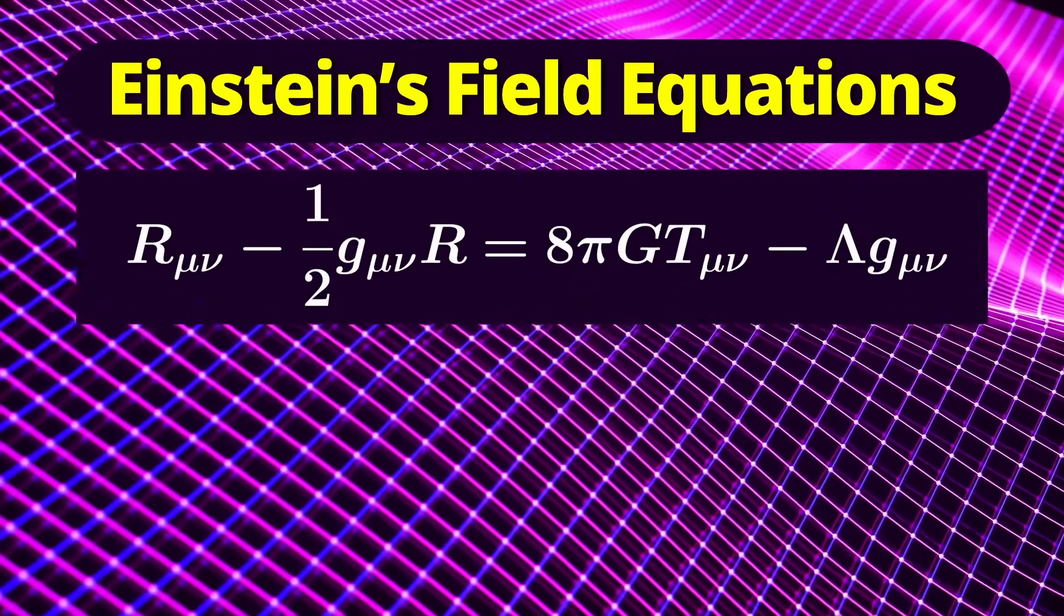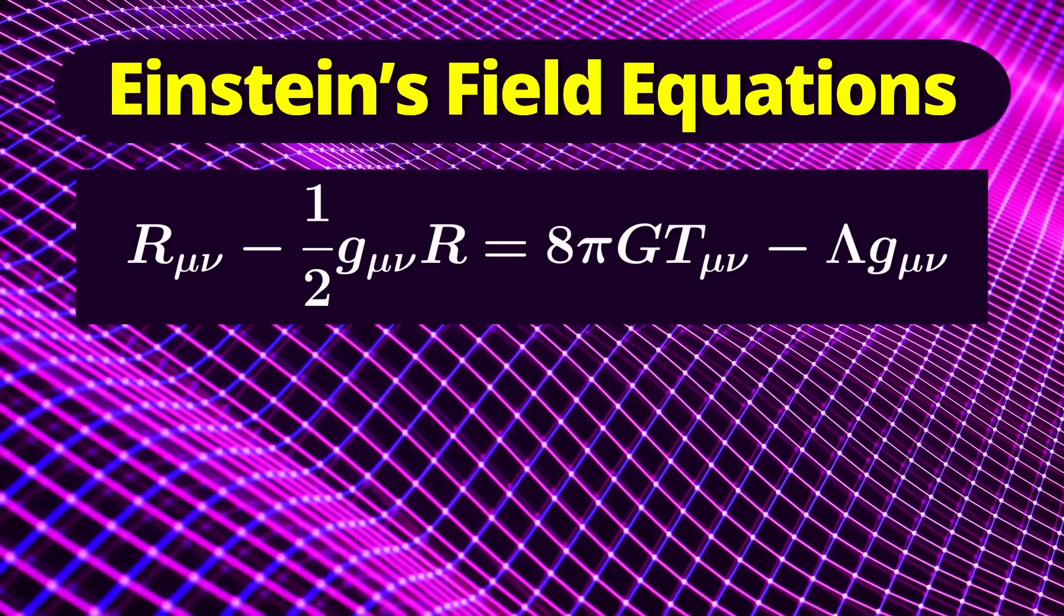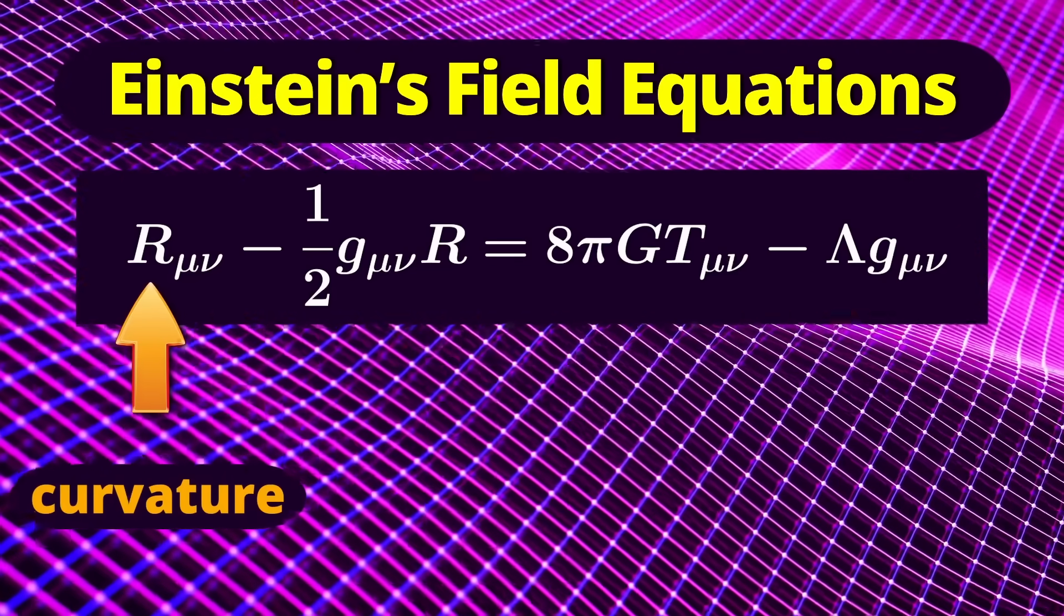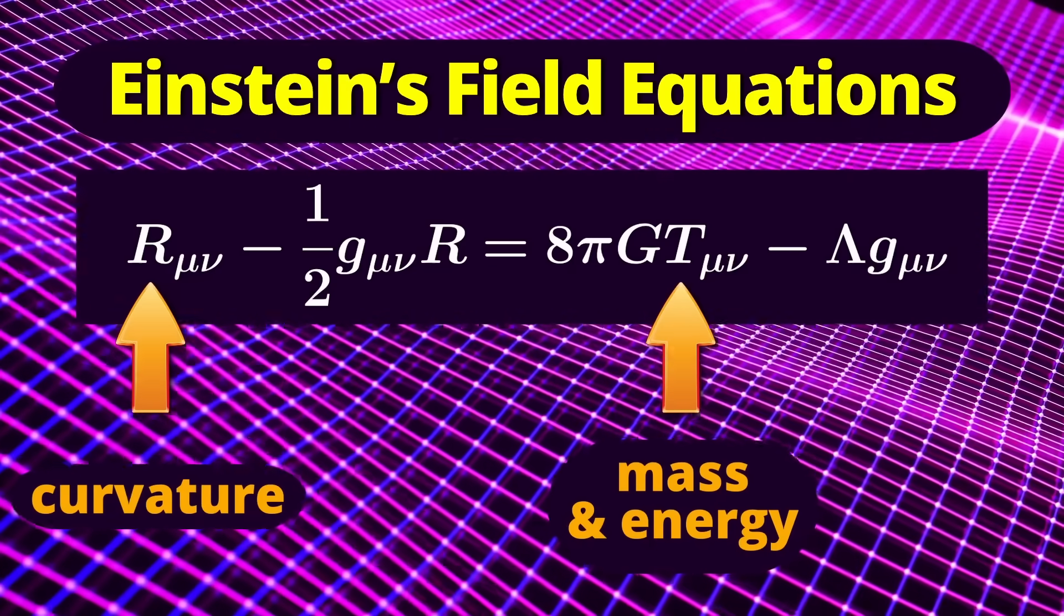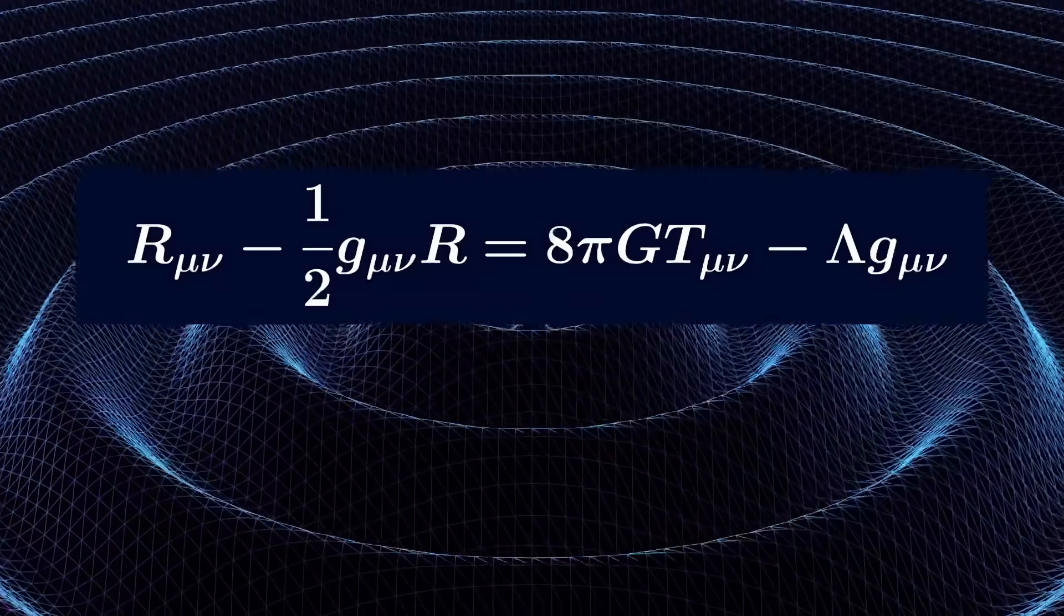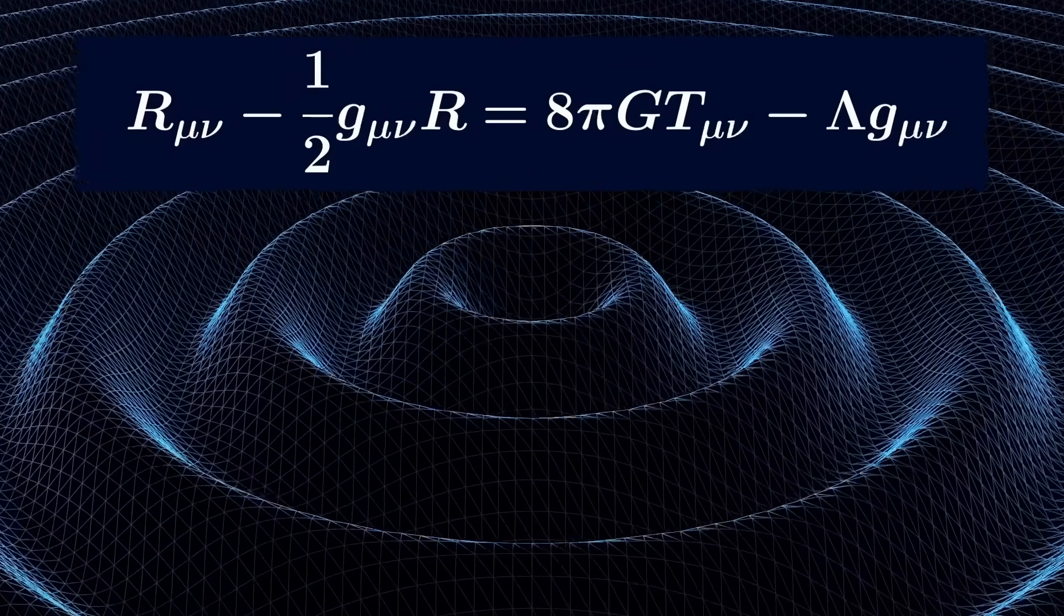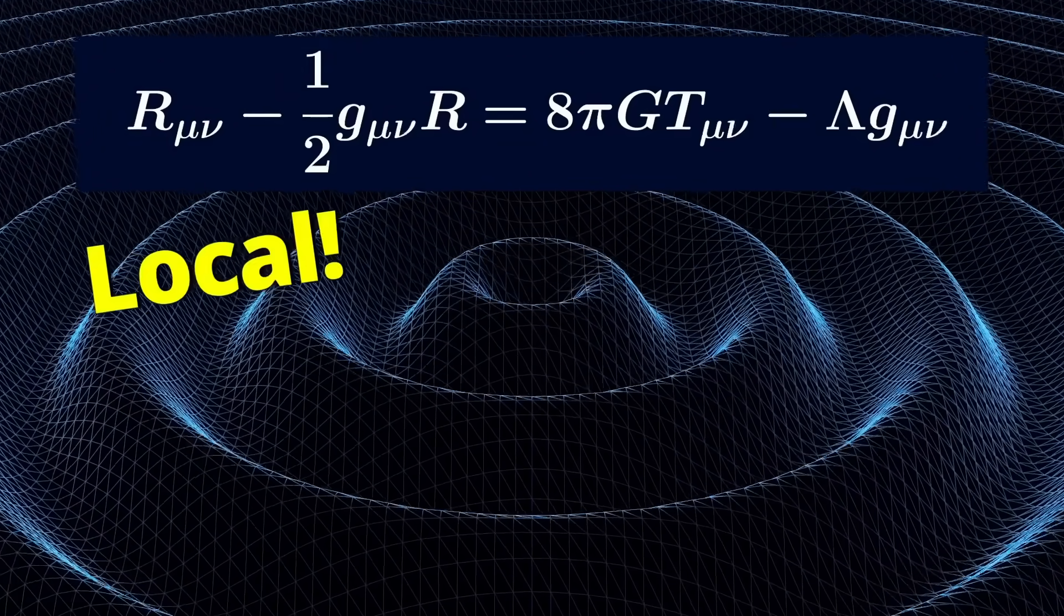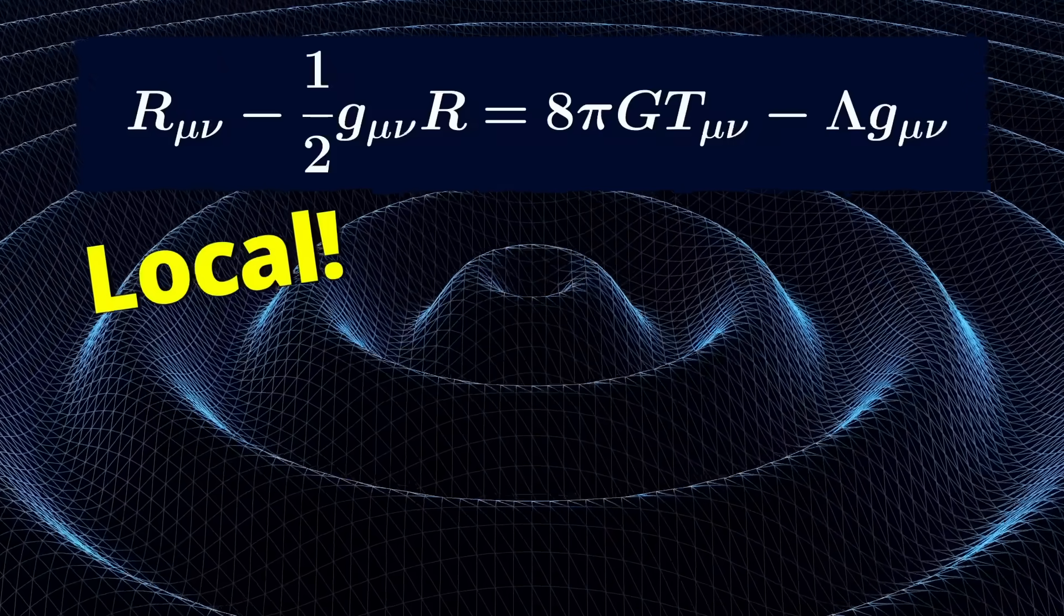Einstein's theory of general relativity, which we use now to describe gravity, doesn't have this problem. In Einstein's theory, gravity is described by the curvature of space and time, and that curvature is caused by the mass and energy in the space-time. If you move the mass that causes space-time to curve, then the curvature changes, but not instantaneously everywhere. The change spreads outward at the speed of light. So Einstein's theory is local.